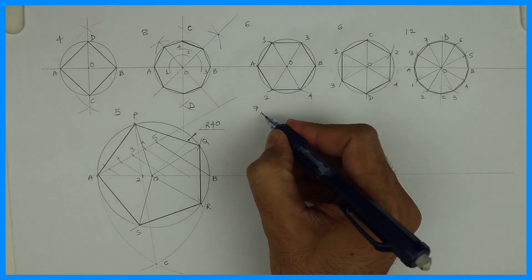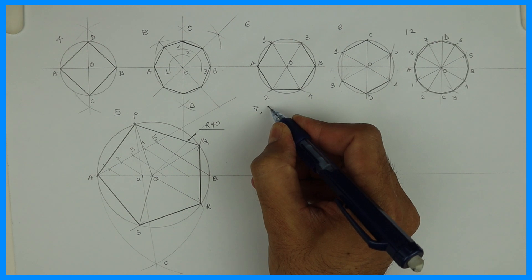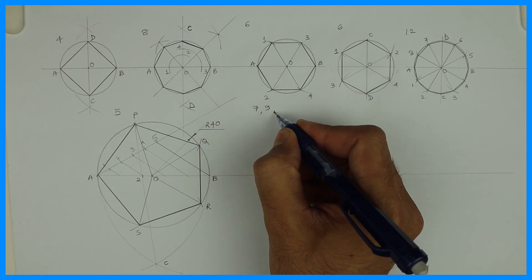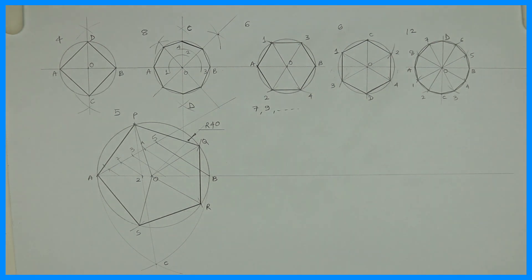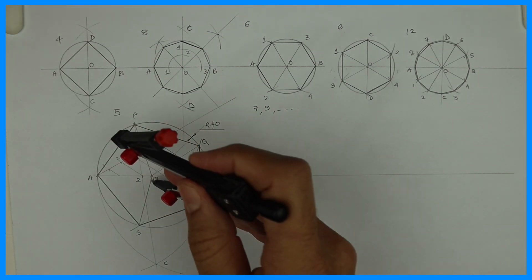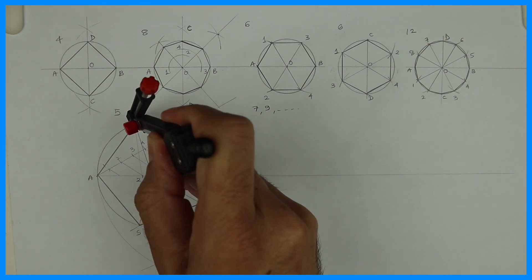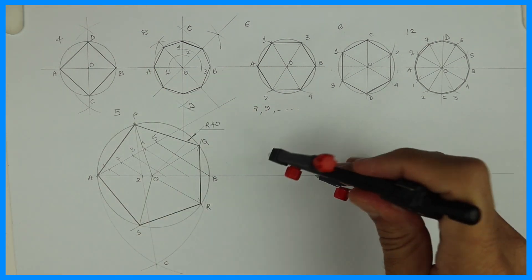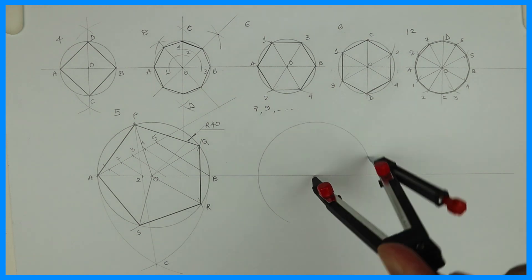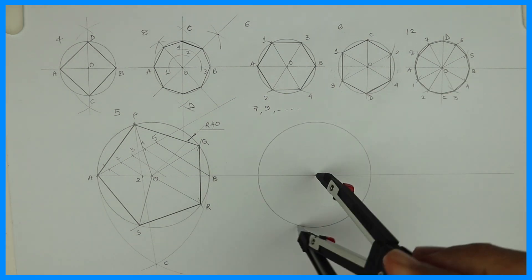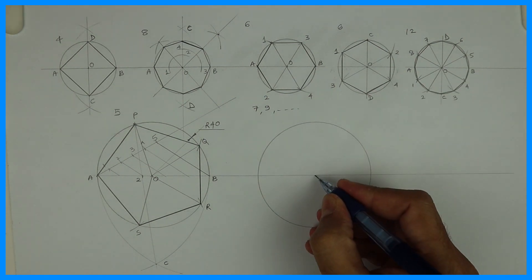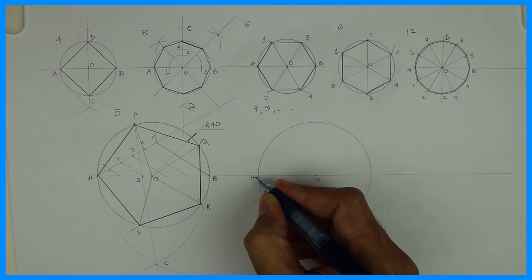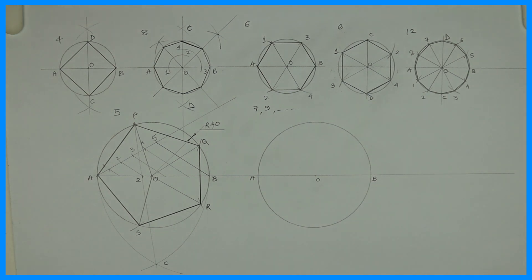Now we are going to do 7, 9, in fact anything. Any polygon you can draw inside a circle. The basic line is you draw a circle and you divide diameter into that many number of equal parts. Now in this case we want septagon, so we'll divide into seven parts. See I'm writing O, A, B. Then I'll divide line AB into seven parts.